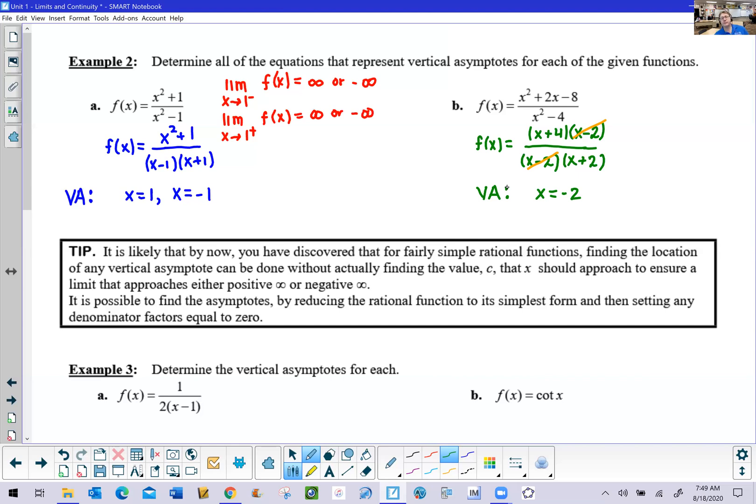I really would encourage you to pause the video at this point and grab your graphing calculator and sketch both of these and verify that that indeed is happening. See that you get these two locations of vertical asymptotes for number 2a and the single location for a vertical asymptote for b.